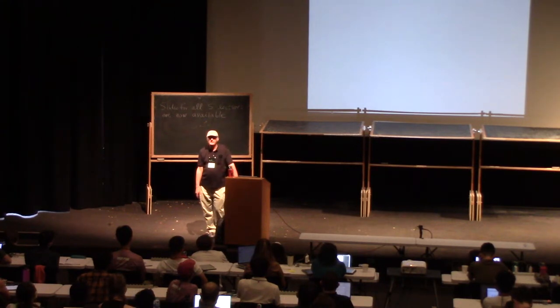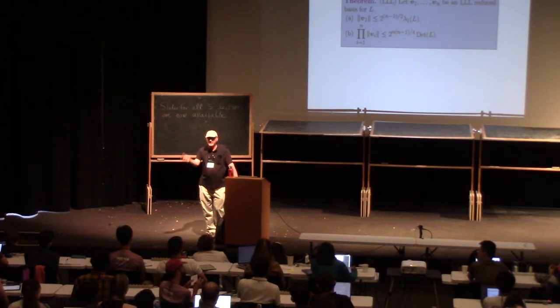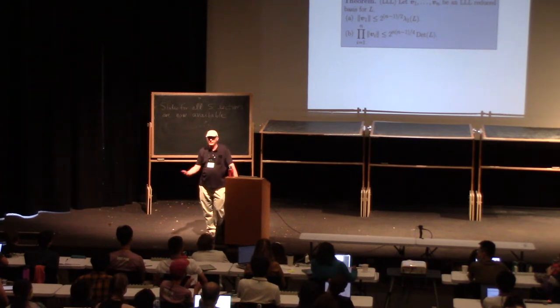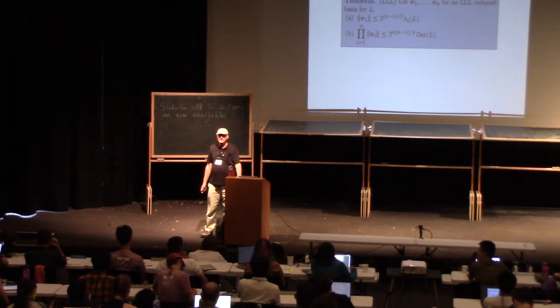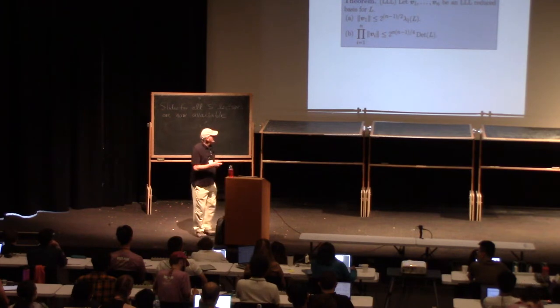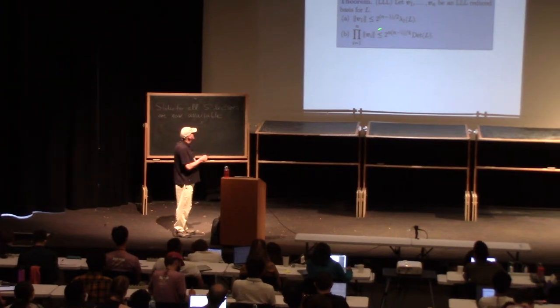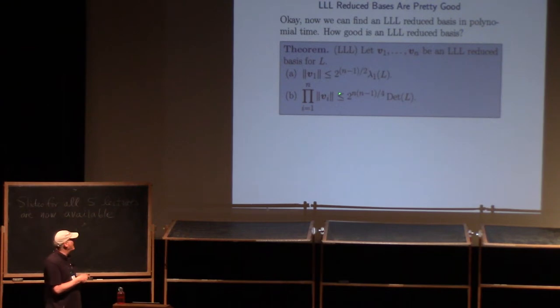So how good is the basis that we get? And the answer is that, as I said, the shortest vector that comes out of LLL is no more than, well, roughly 2 to the n over 2 times longer than the actual shortest vector. And the product of the vectors that come out, again, there's this exponential factor times the determinant. Remember, Hadamard's inequality says that there's an inequality in the other direction without this thing. And we're always trying to find vectors where Hadamard is pretty closely true, as close to true as possible. So this is how close we can get with our basis.